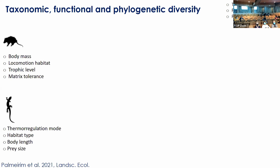I'll show results for three dimensions of diversity: taxonomic, functional, and phylogenetic. For taxonomic diversity, I used the Simpson index; for functional and phylogenetic, I used the raw index correspondingly. In terms of traits for small mammals, I considered body mass, locomotion habitat (terrestrial, scansorial, and arboreal), trophic level (the higher, the more carnivorous), and a matrix tolerance index derived from a nearby fragmented landscape — the more often a species was recorded using the matrix, the more tolerant it was.